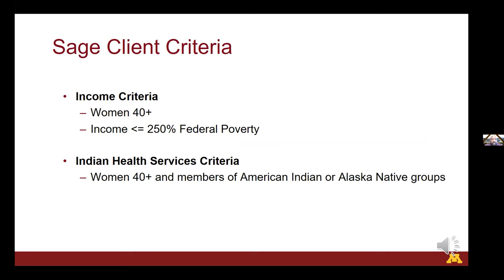The SAGE program in Minnesota has specific eligibility criteria. They screen any woman 40 years or older who meets an income threshold of less than 250% above poverty. Any woman meeting that criteria can be screened every year if she qualifies. They also have a working relationship with Indian Health Services, so American Indian women can qualify based on age alone. We needed to account for these two criteria in our analysis.